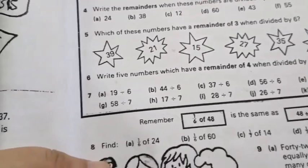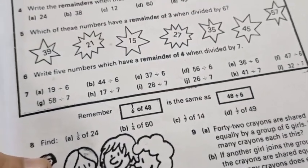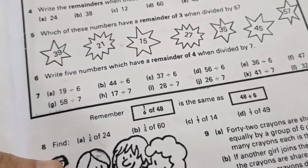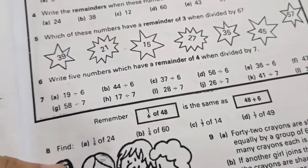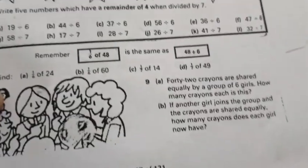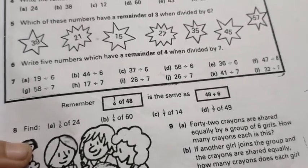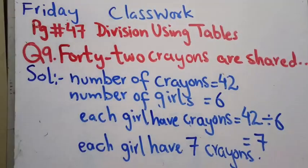In this question they are saying there is a group of 6 girls and there are total 42 crayons. These crayons have to be shared among these girls. When we are sharing it means we have to divide it. I have written the solution over here and I'll explain it right now.